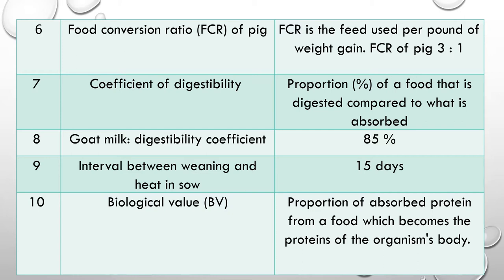Question 7: Coefficient of digestibility — another important parameter. The answer is the proportion or percentage of food that is digested compared to what is absorbed.